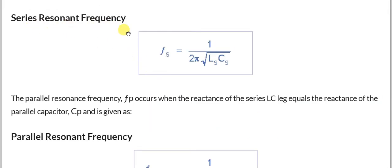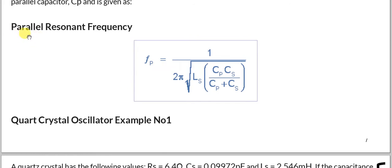The series resonant frequency formula is: Fs = 1 / (2π√(LsCs)), where Ls and Cs are the series branch components. The parallel resonant frequency is: Fp = 1 / (2π√(Ls × Ceq)), where Ceq is the equivalent capacitance of the total crystal: Ceq = (Cp × Cs) / (Cp + Cs). This is the typical resonant frequency relationship for the quartz crystal.